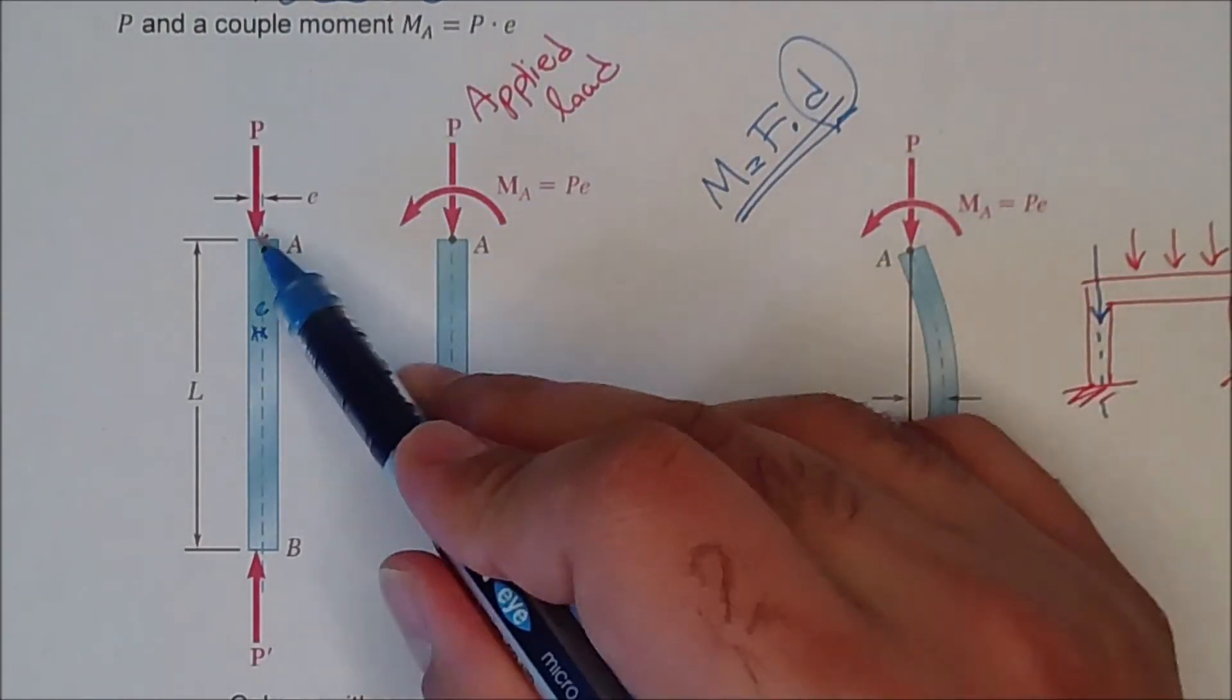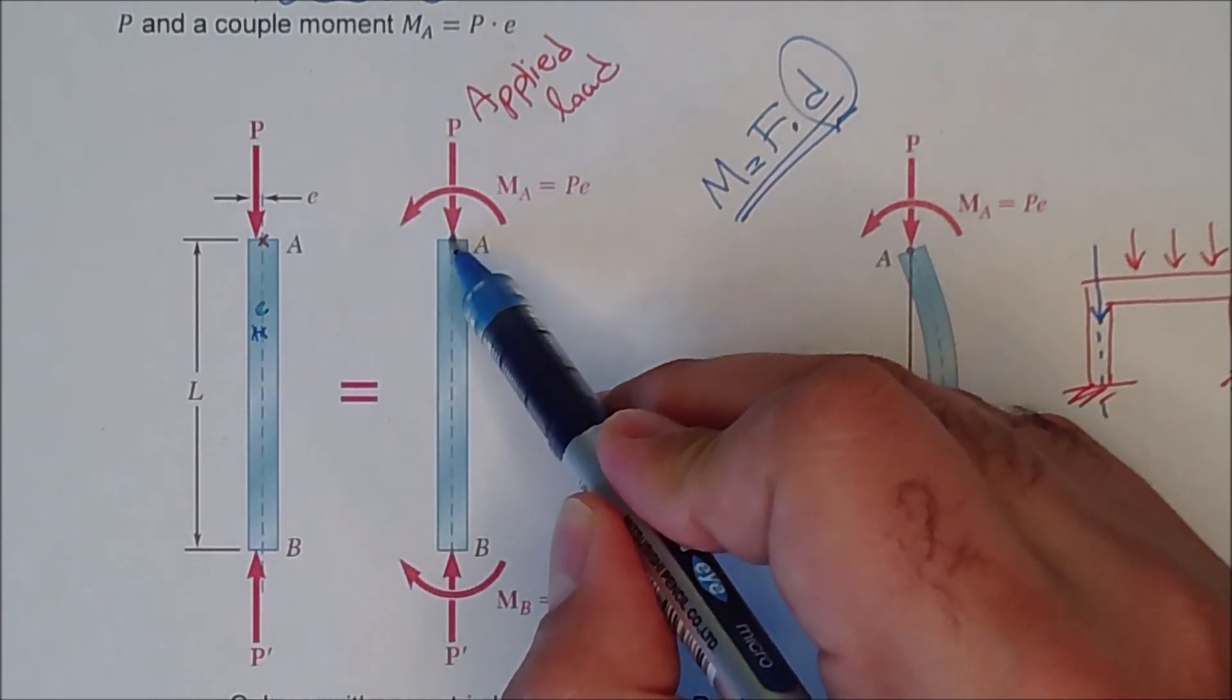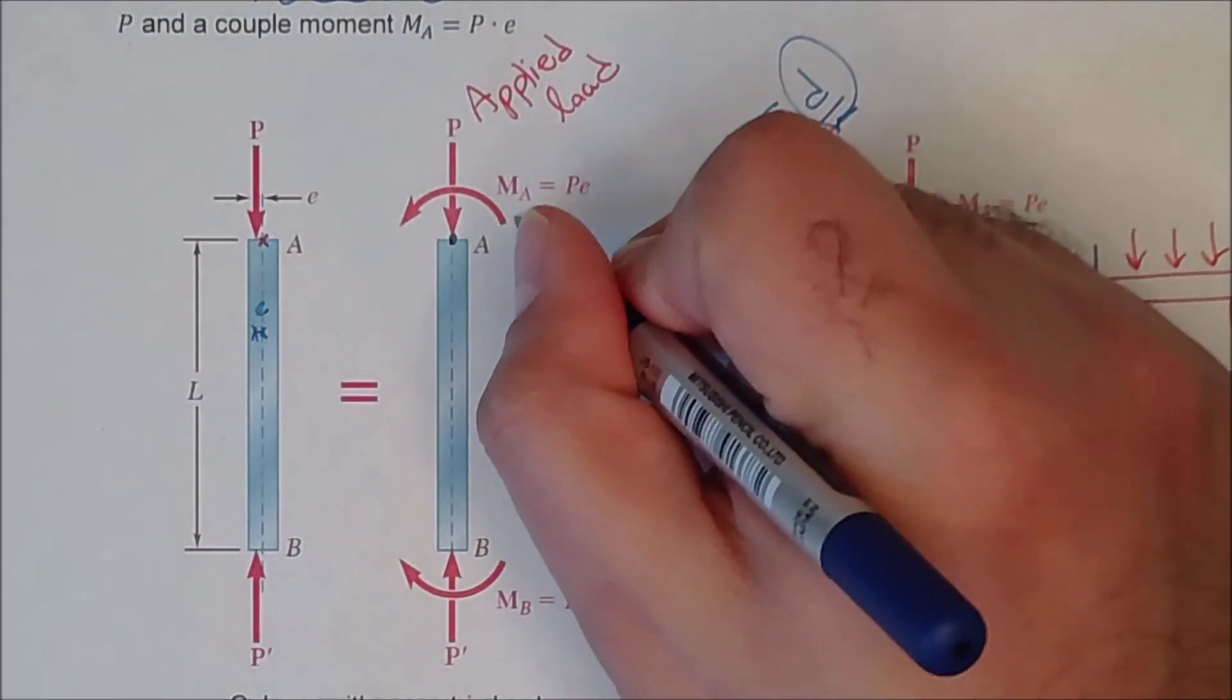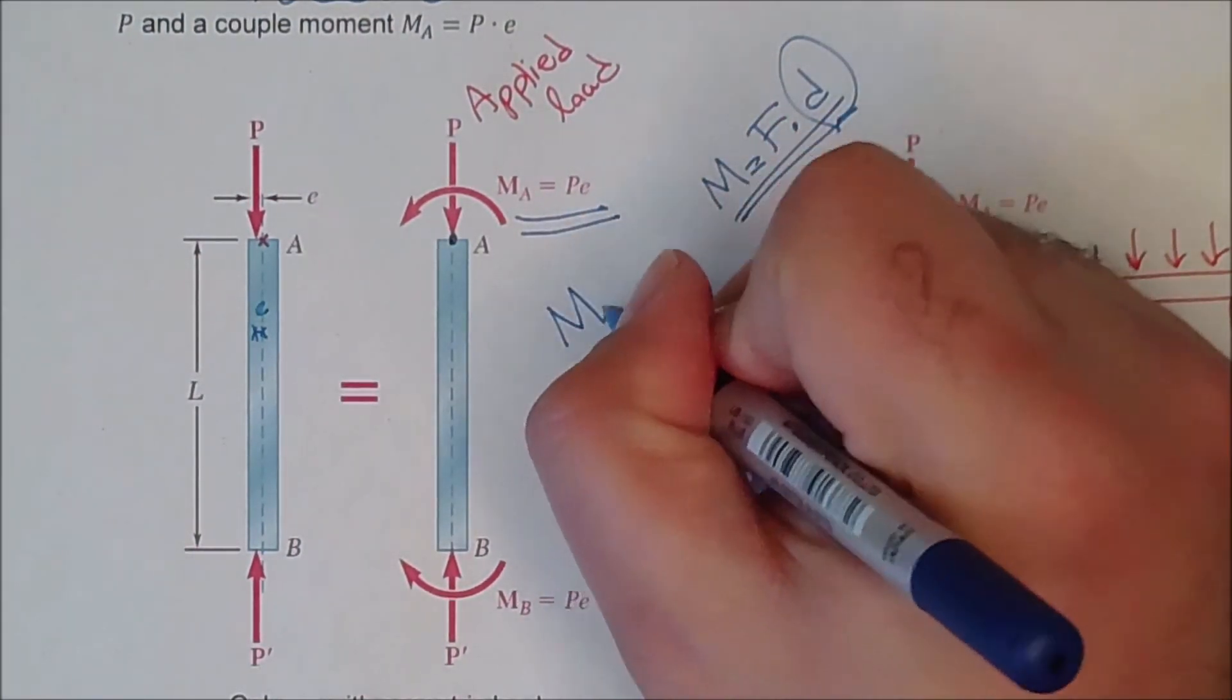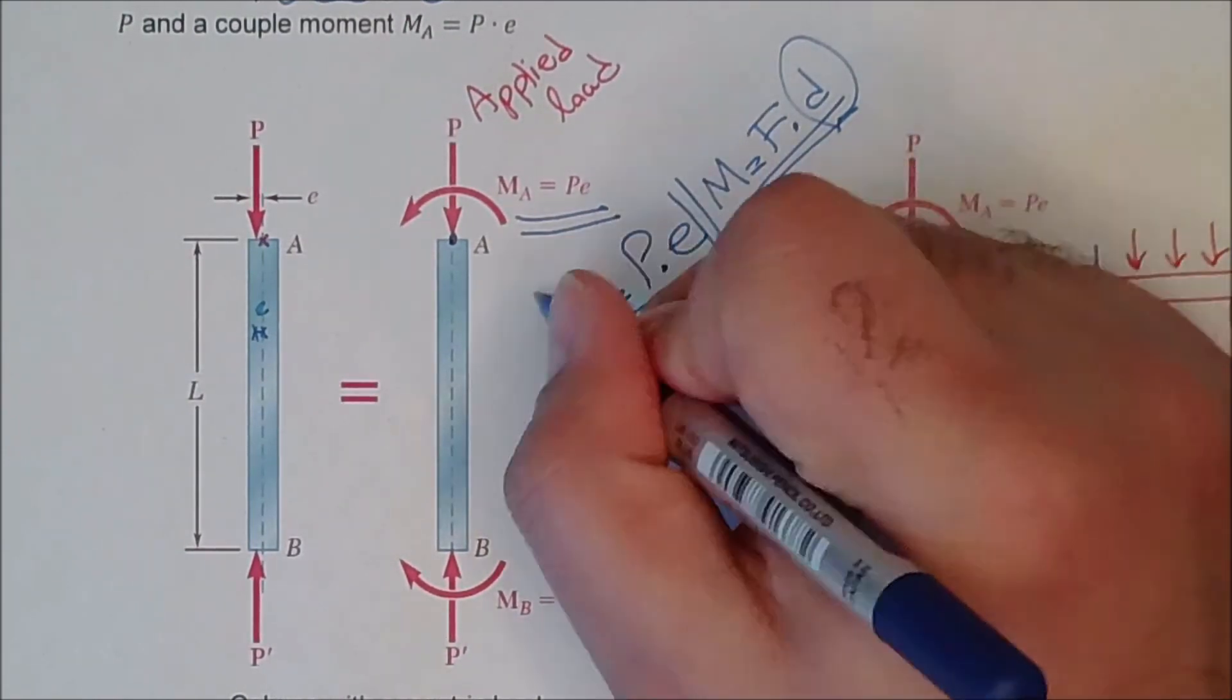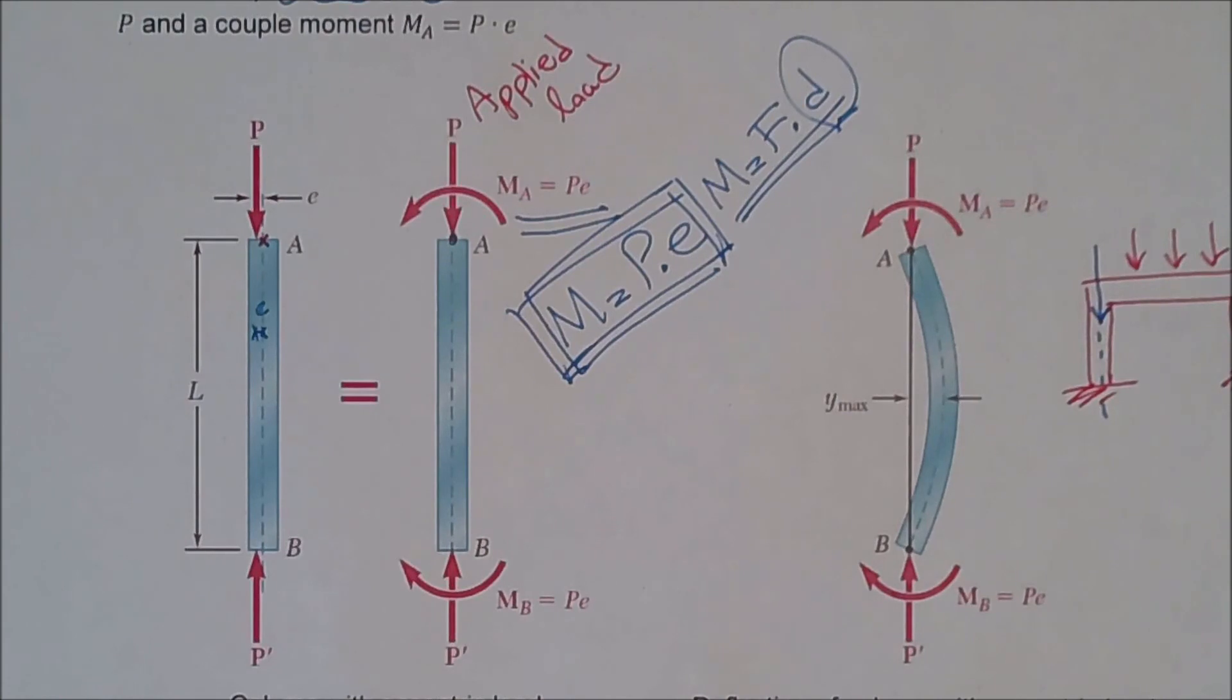Now, if I put this P to the center in order to calculate the Euler's theory and the critical force, I will have another problem as well. I will have a moment which is generated by that eccentric distance. This concept of eccentricity and its resultant moment will be something that you will learn in coming years of structural courses.